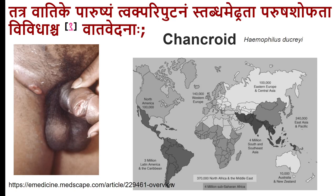This is exactly what is seen in chancroid, produced by Haemophilus ducreyi. The incidence of Haemophilus ducreyi in Western countries has reduced significantly, but in India and Asian countries it is still prevalent and a cause of concern. The reduction in the West is largely attributed to the popularity of condom use during sexual activity.